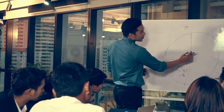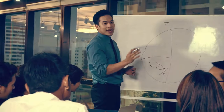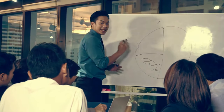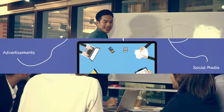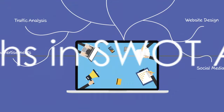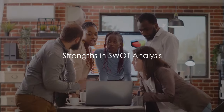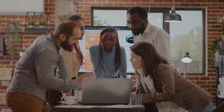SWOT stands for strengths, weaknesses, opportunities, and threats. It's a strategic planning method that helps businesses understand their internal and external environments. Strengths are the characteristics that give a business an advantage over others in the digital market.